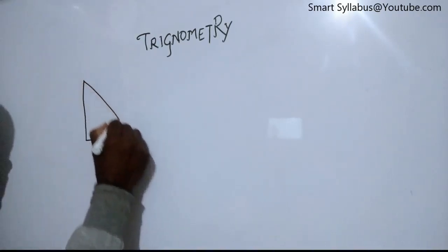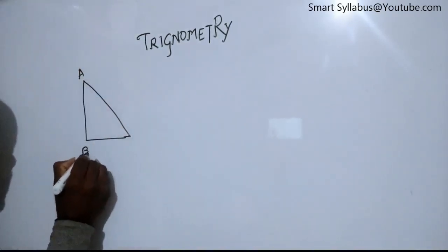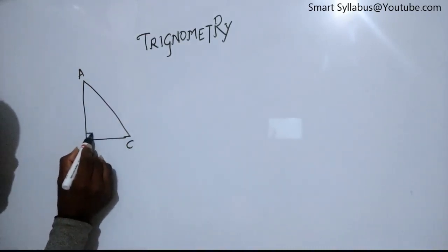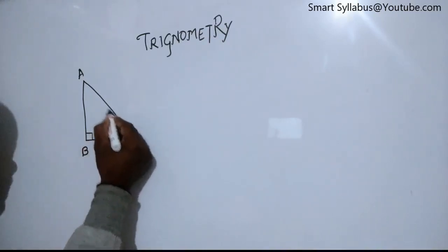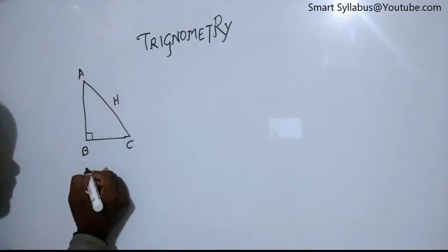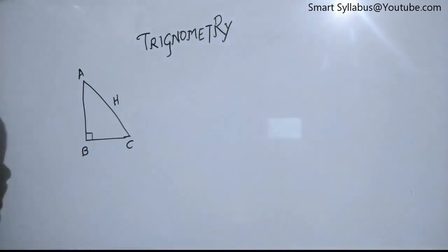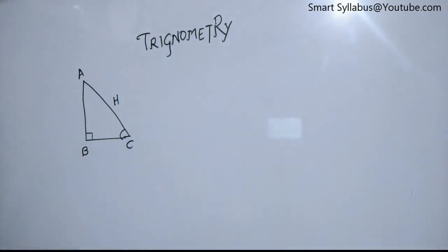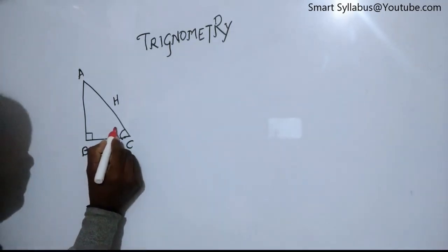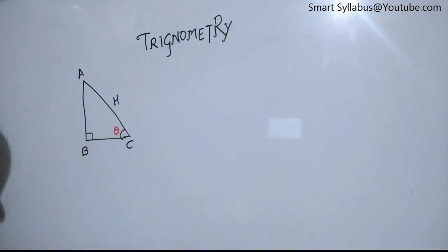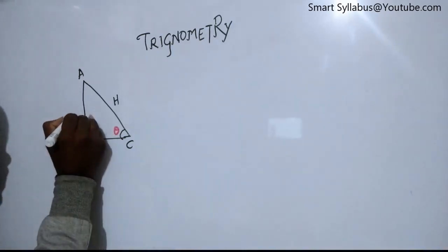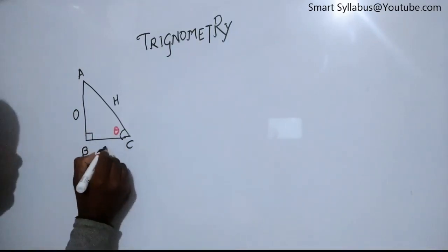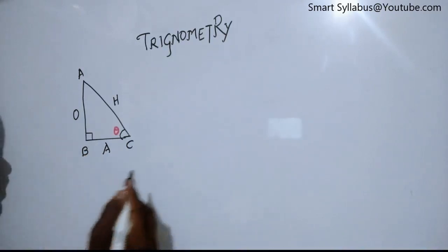In a right angle triangle ABC, where angle B is right angled, the side opposite to angle B — that is AC — is the hypotenuse. The remaining two sides, adjacent and opposite, depend upon which angle we consider. If we take angle C as theta, then the opposite side of theta is AB, called the opposite side, and BC is called the adjacent side.